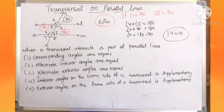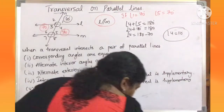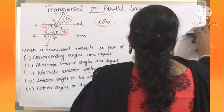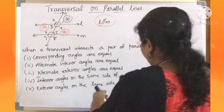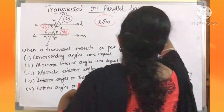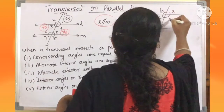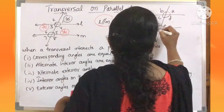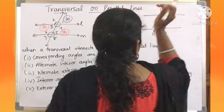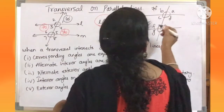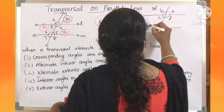In the reverse manner, we can also use these properties. Sometimes they will give a figure with points labeled A, B, C, D, E, F, G, H, and give angle B as 70 degrees and angle F as 70 degrees, with line L and line M.